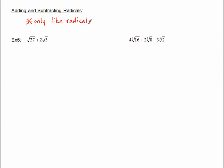We talked about that in the previous tutorial. Like radicals must have the same index and the same radicand. Now clearly these are both square roots, but they do not have the same numbers for the radicand, so these are not yet like radicals. But the square root of 27, we know we can simplify that. Square root of 27 is 9 times 3, so the square root of 9 times the square root of 3 equals the square root of 27. And 2 square roots of 3 is still just 2 square roots of 3.